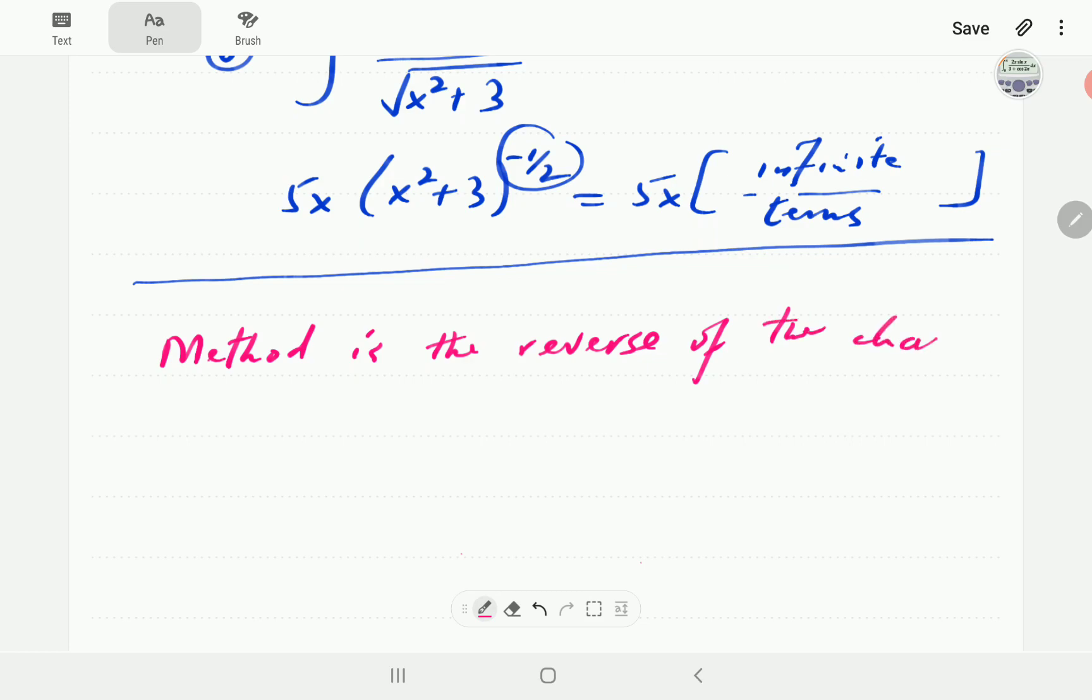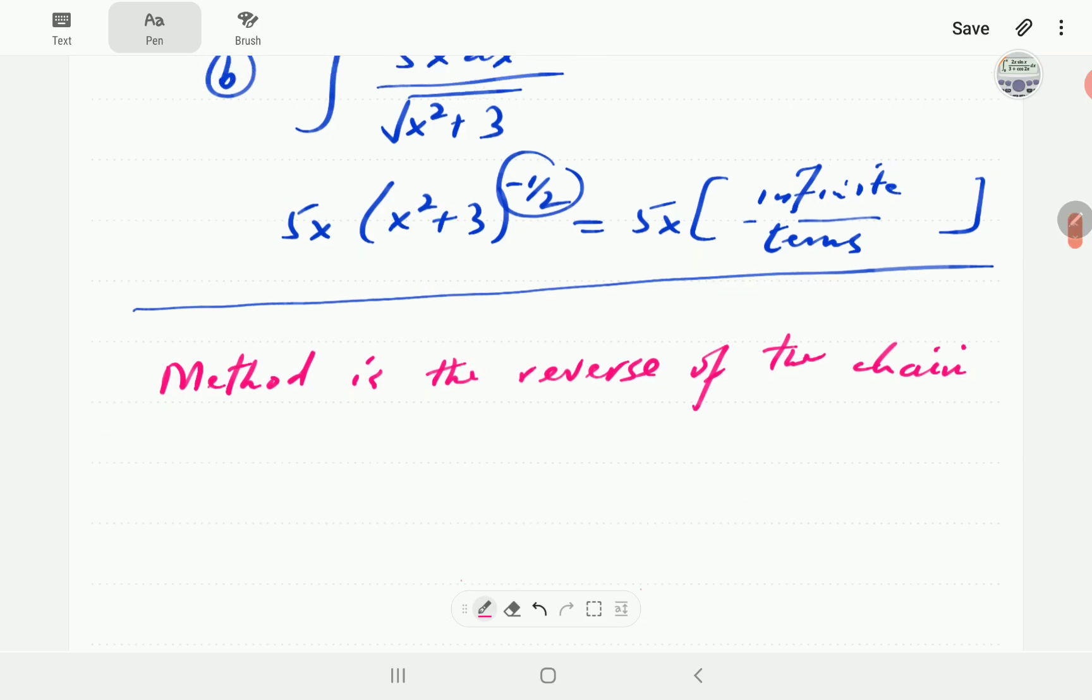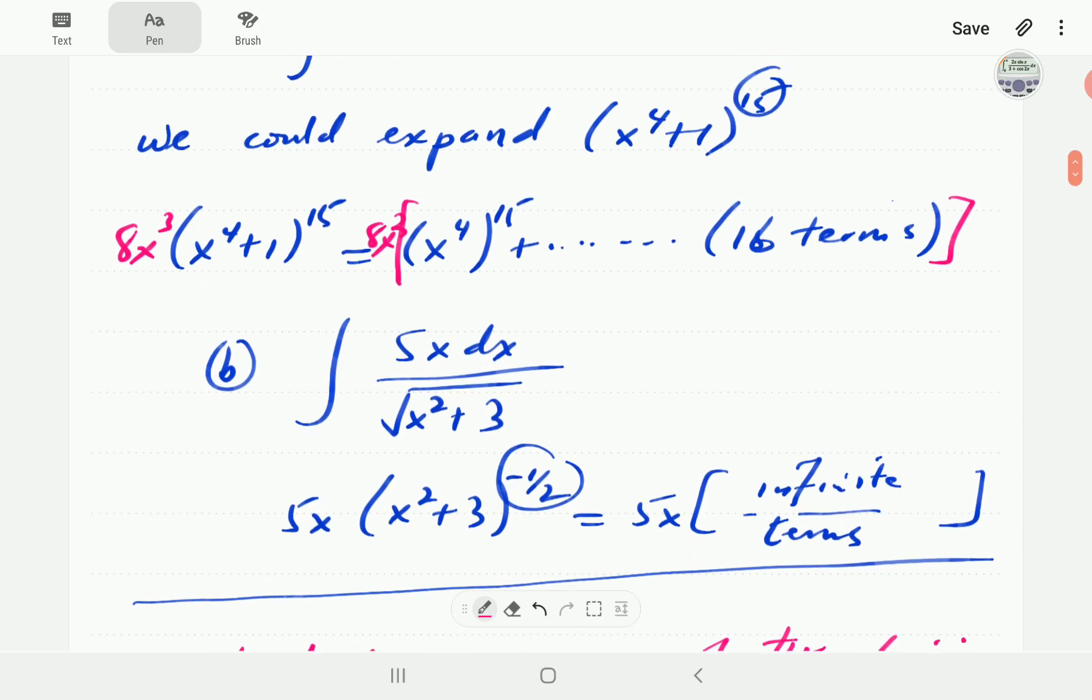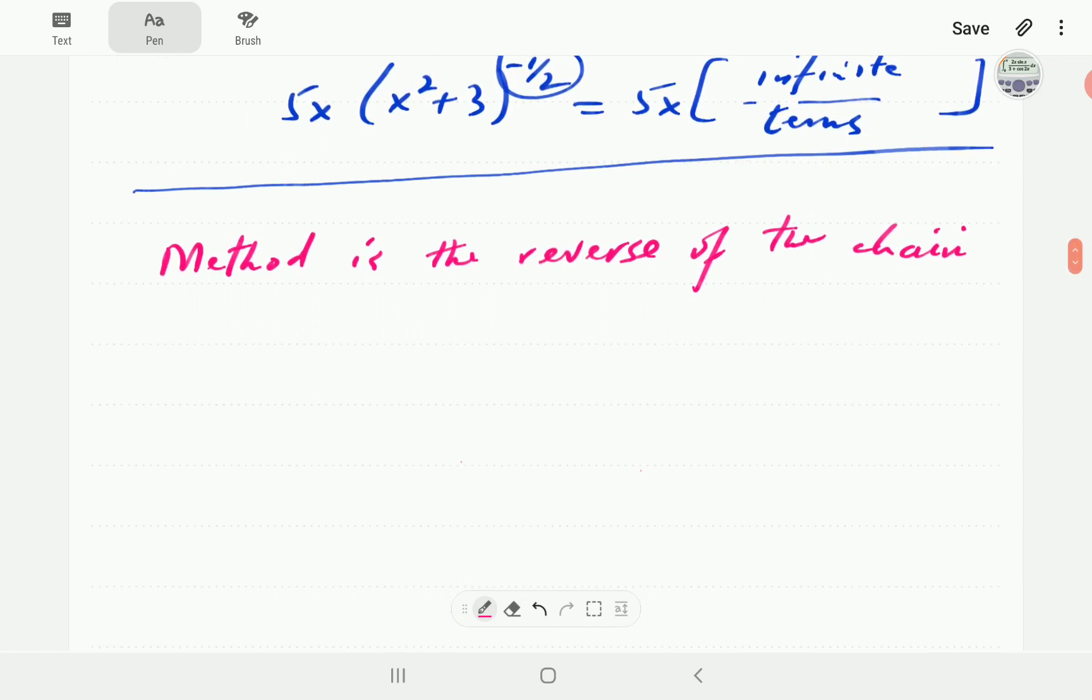The chain rule enables us to differentiate expressions without expanding. The method of u-substitution is going to enable us to integrate expressions without having to expand.